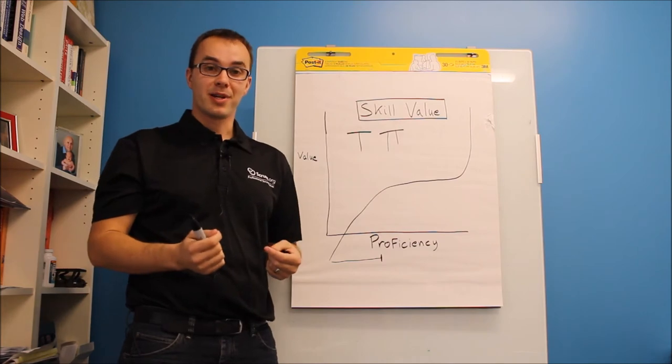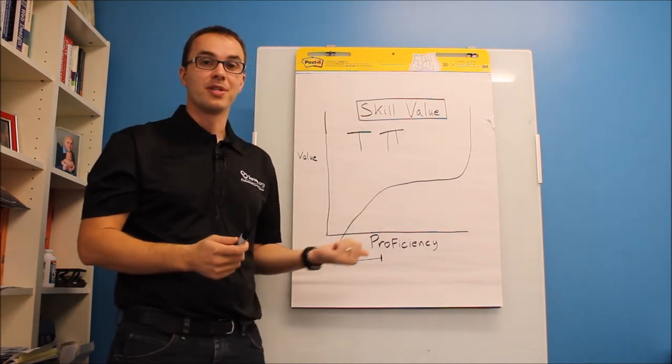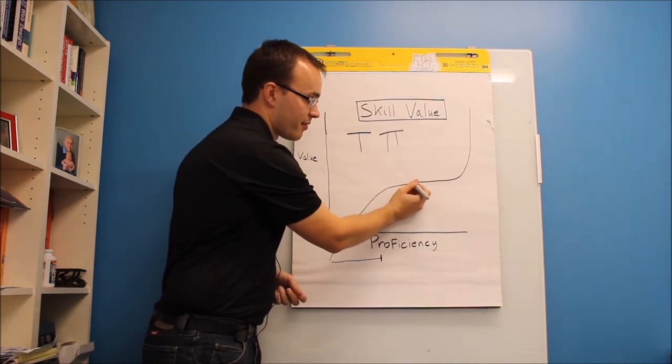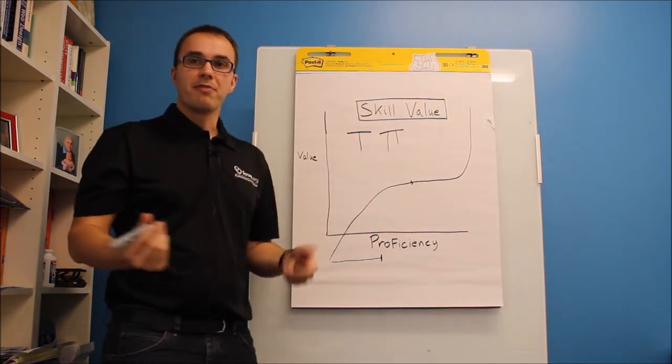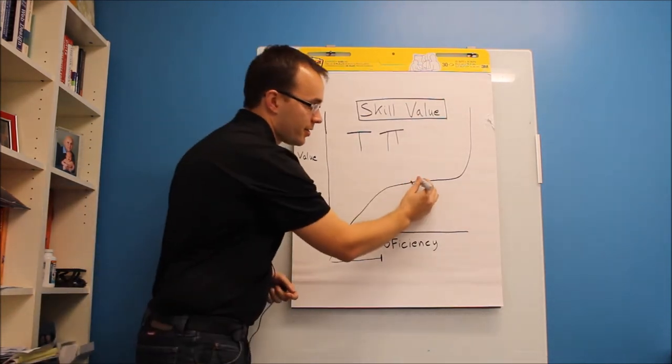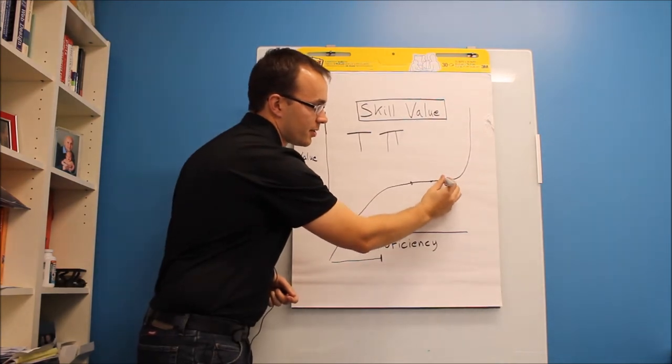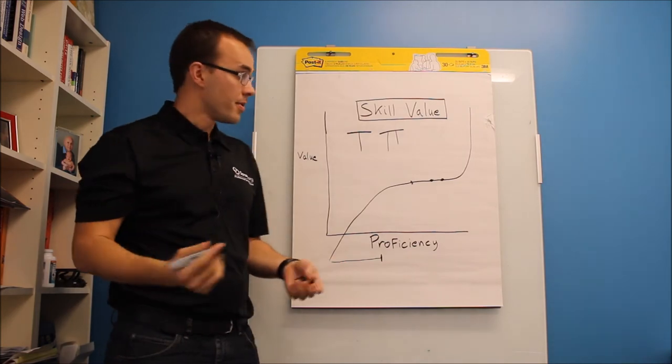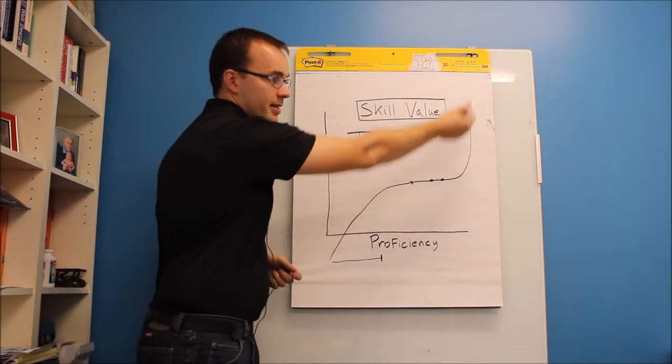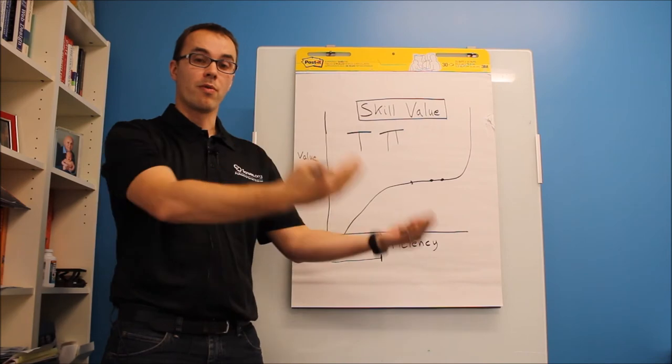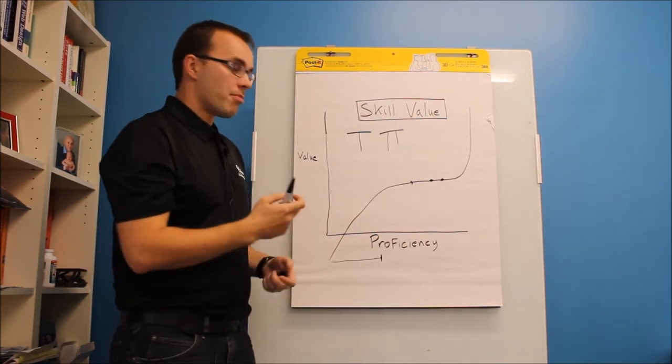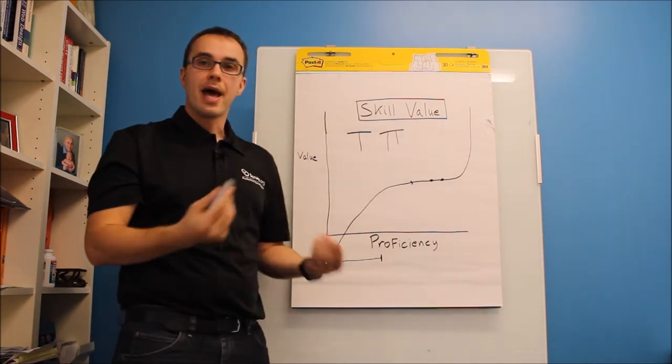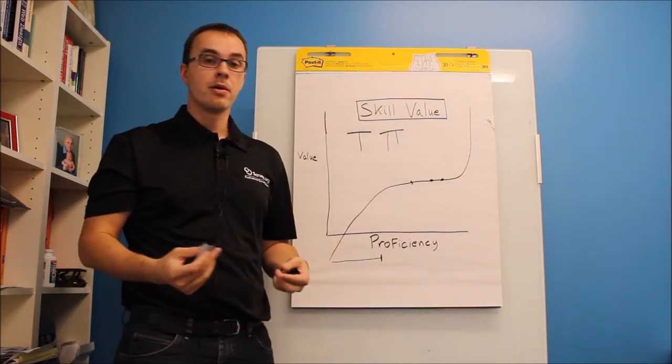So the problem we have in organizations is we just think of people in the specialty. So if I have a QA person or developer and they're roughly there, we spend all our energy trying to increase their skills in this one area. Yeah, it provides some value, but if they're not kind of at this end where we're going to get a lot more value out of them or for their sake, then probably what we want to start thinking about is what is another skill we can add or help them grow in.